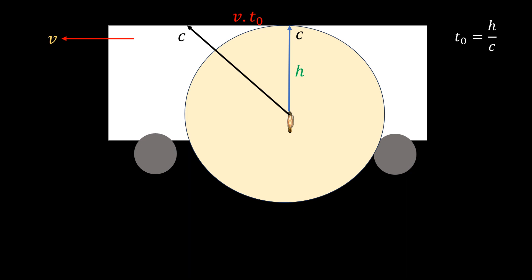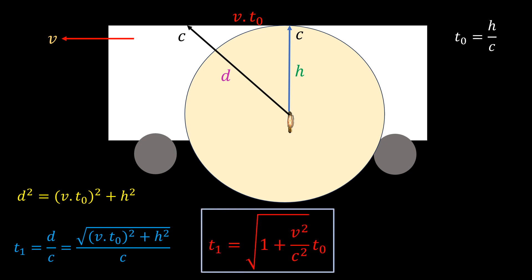Let the inclined distance be represented as d. By Pythagoras theorem, this distance is given as follows. So, the time it takes the light to travel the inclined path is equal to the distance over the speed. Noting that h over c is equal to t0, t1 can be written as follows. Since v and c are both squared, the square root is always greater than 1. So, t1 is always greater than t0.